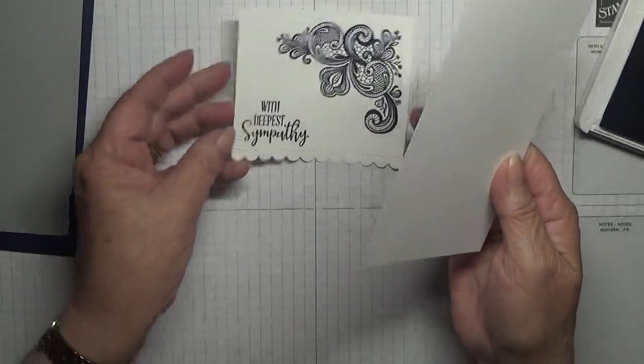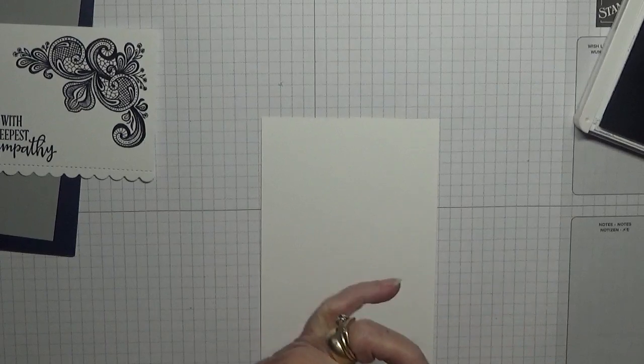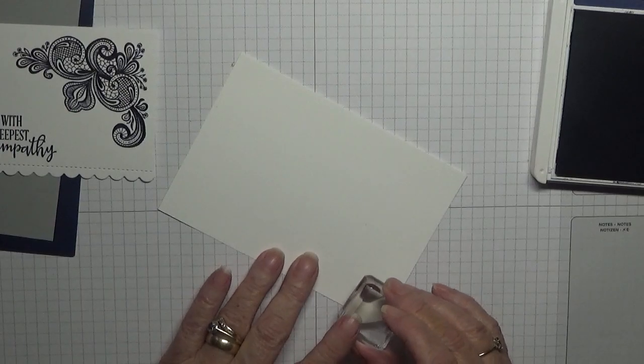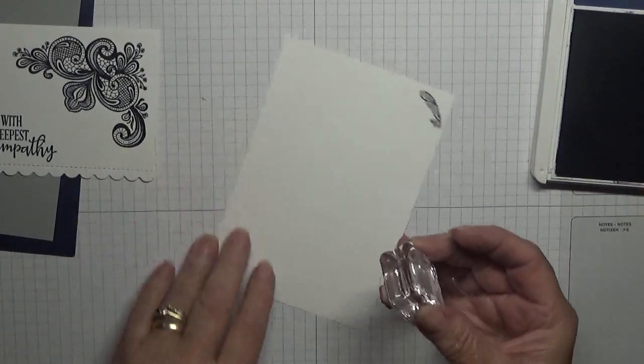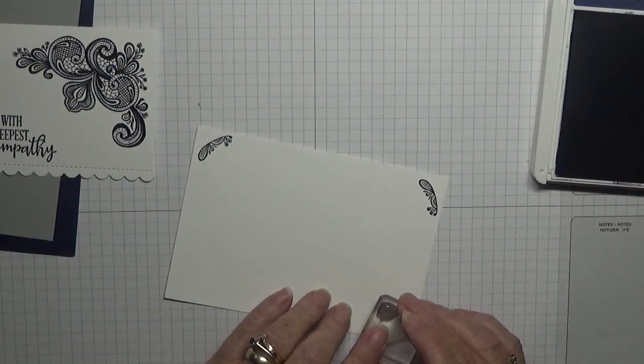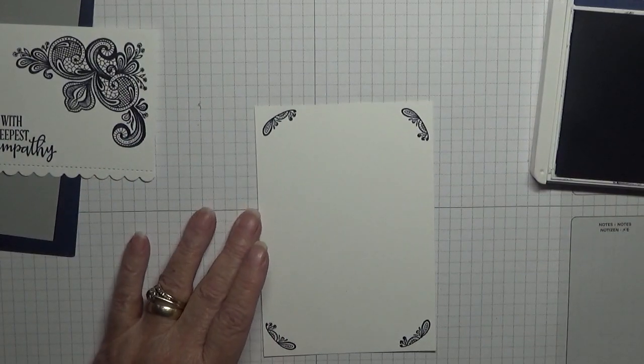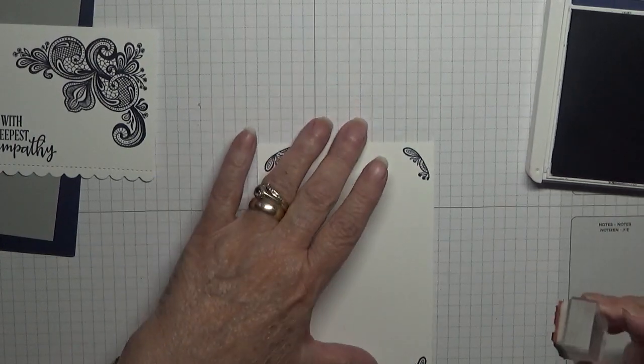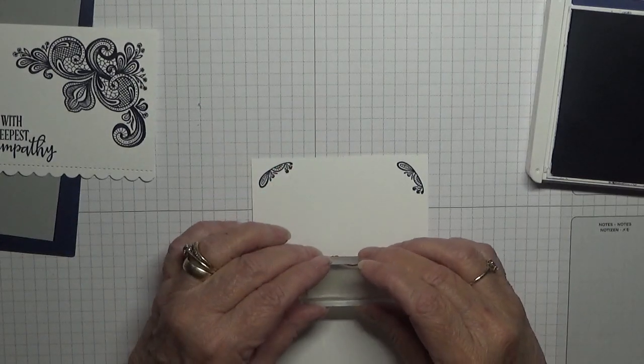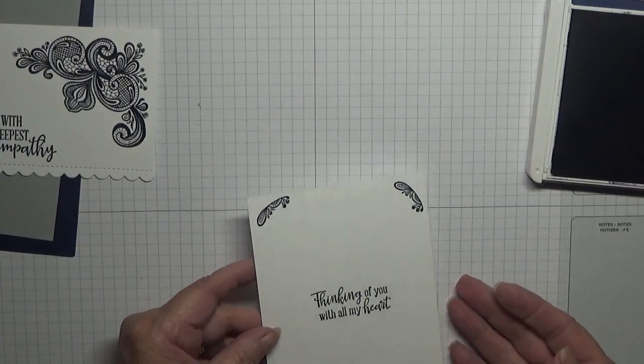Right, the inside bit. What I did with this, I've got this little stamp here, and I just went in each corner of it just to give a bit of decoration in each corner, like that. And then with the sentiment, Thinking of You With All My Heart, I should just pop that in the middle like that. That's them two done.